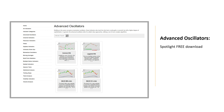With that, I'll wrap up this Indicator Spotlight — head to the link where you can pick up your free download to the Quantitative Qualitative Estimation, or the QQE. You'll find it in the advanced oscillators category. Members also have access to the Connors RSI, the Laguerre RSI, MSED BB lines, Casey lines, Rainbow oscillator, just to name a few in this category.